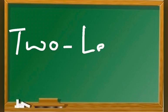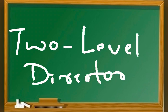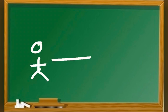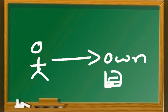The second category is the two level directory. In two level directory, each user gets their own directory space, and file names only need to be unique within a given user's directory. A master file directory (MFD) is used to keep track of each user's directory and must be maintained when users are added or removed from the system.